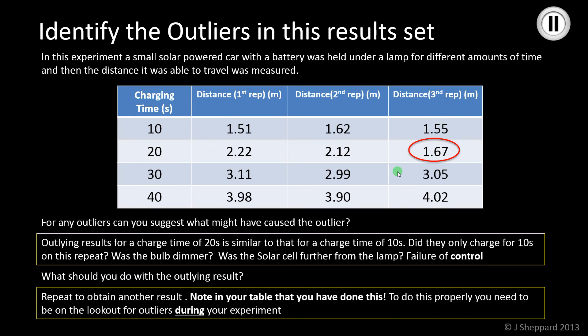If we have that outlying result, we would note in your table what we've done, we will think about the reason why, just note down next to your table, and obtain another result. You have to do this during your experiment if it's going to be as effective as it possibly can be. That's it for outliers.